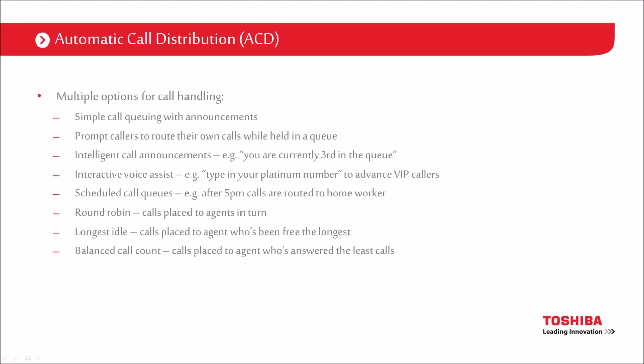We can prompt callers to route their own calls — we can actually ask them for something and that allows us to route on it. We can do intelligent call announcements: 'you are currently third in the queue', or the average wait time from where you are. We can use interactive voice assist and ask the customer to put in their Platinum number. If we validate that Platinum number, we could advance the call up in the rankings — move it to VIP, for example.